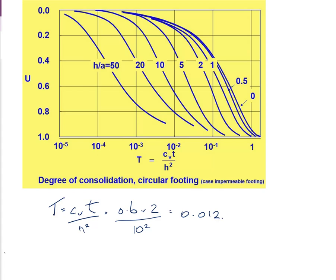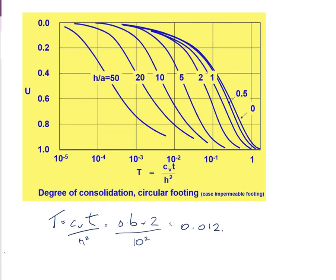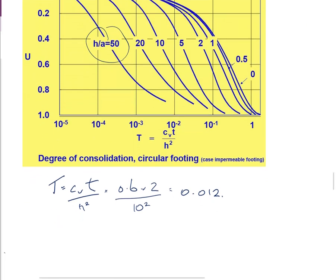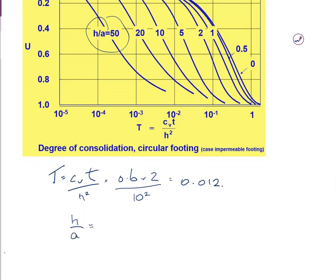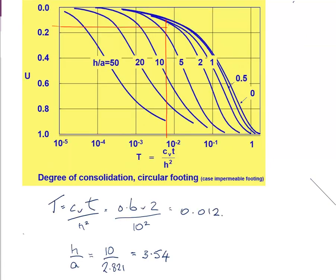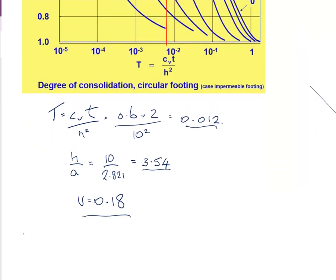Referring to the T-U chart, with T = 0.012 and H/a = 10 / 2.821 = 3.54: reading from the x-axis at 0.012, taking it up — roughly halfway between the 2 and 5 curves — and across gives a degree of consolidation U = 0.18, meaning 18% consolidation has occurred after 2 years.